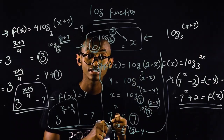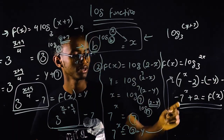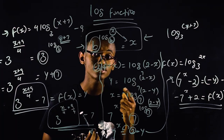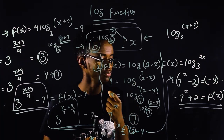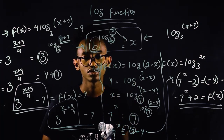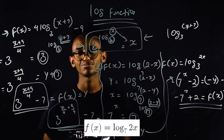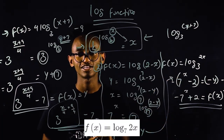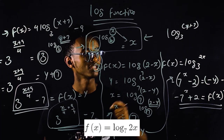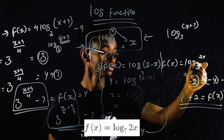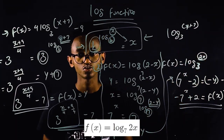Log 2 minus x in the base 7, inverse: minus 7 x, the power of x minus 7, the power of x plus 2. F of x equals 2 log base 3, the power of 2x.